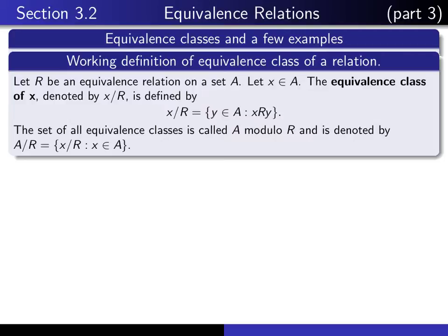The equivalence class of X is an entire subset of the underlying set A. And if we take all of the equivalence classes as a set, the set of all the equivalence classes is known as A modulo R, and it's denoted by A slash R. So A slash R is the set of all equivalence classes, as X varies over all points of A.